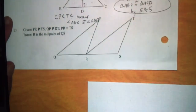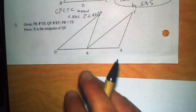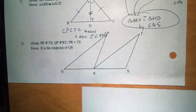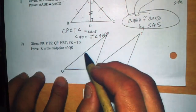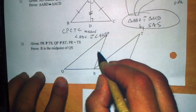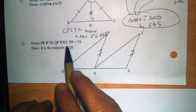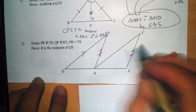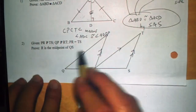Let's move to the next one. Given that PR is parallel to TS — this symbol means parallel — I'm going to draw the diagram. PR is parallel to TS, so I'll mark it with arrows. Similarly, QP is parallel to RT — I'll mark that with a single line. We've got two pairs of parallel lines. And we're also given that PR equals TS — they're not only parallel but equal, very important.